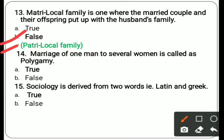Fourteenth: marriage of one man to several women is called polygamy — answer is true. Fifteenth: sociology is derived from two words — Latin and Greek — answer is true.